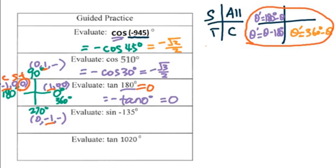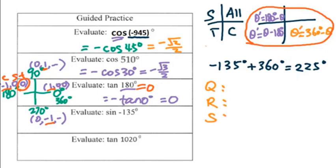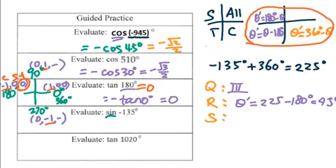For the next question: sine of negative 135 degrees. We add 360 degrees to negative 135, and we get 225 degrees. Then we go to QRS. The quadrant is the third quadrant. For the reference angle, we use 225 minus 180, which is 45 degrees. Using 'All Students Take Calculus,' sine in the third quadrant is negative. So we get negative sine 45 degrees, which equals negative square root of 2 over 2.